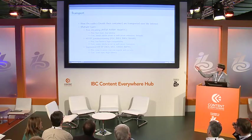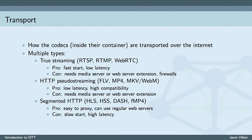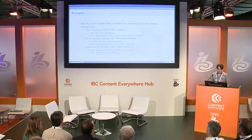The second type is pseudo streaming. Pseudo streaming takes a media file and delivers it bit by bit — not all at once — to the end delivery point. This gives you the advantages of low latency and very high compatibility because it can pretend to be a file download. On the downside, you still need some kind of media server or web server extension to deliver this format. It's slightly easier to set up than true streaming, though, and there are no firewall problems.